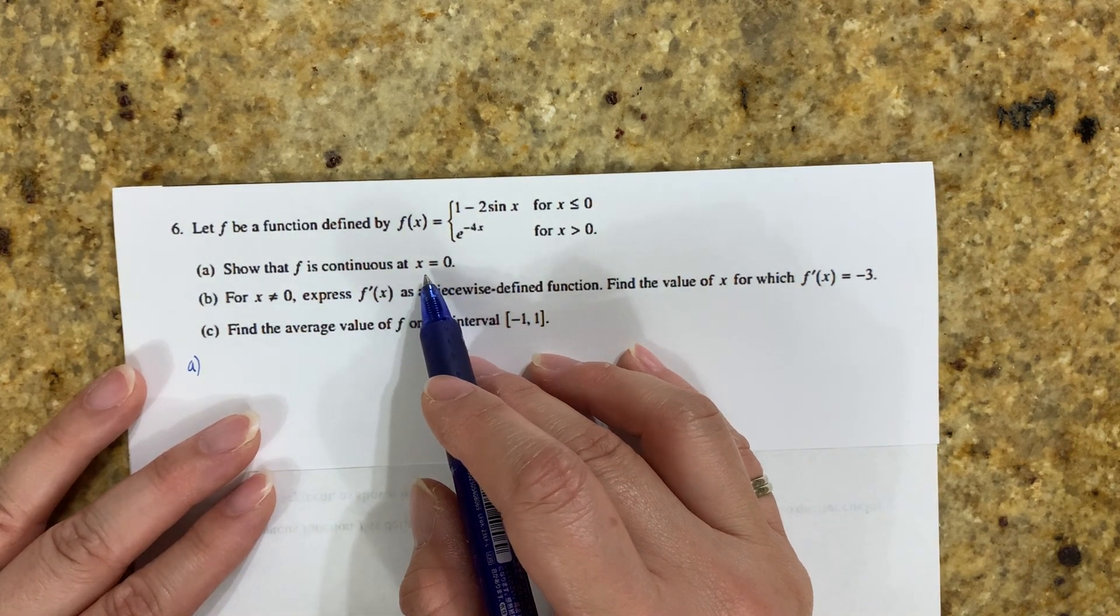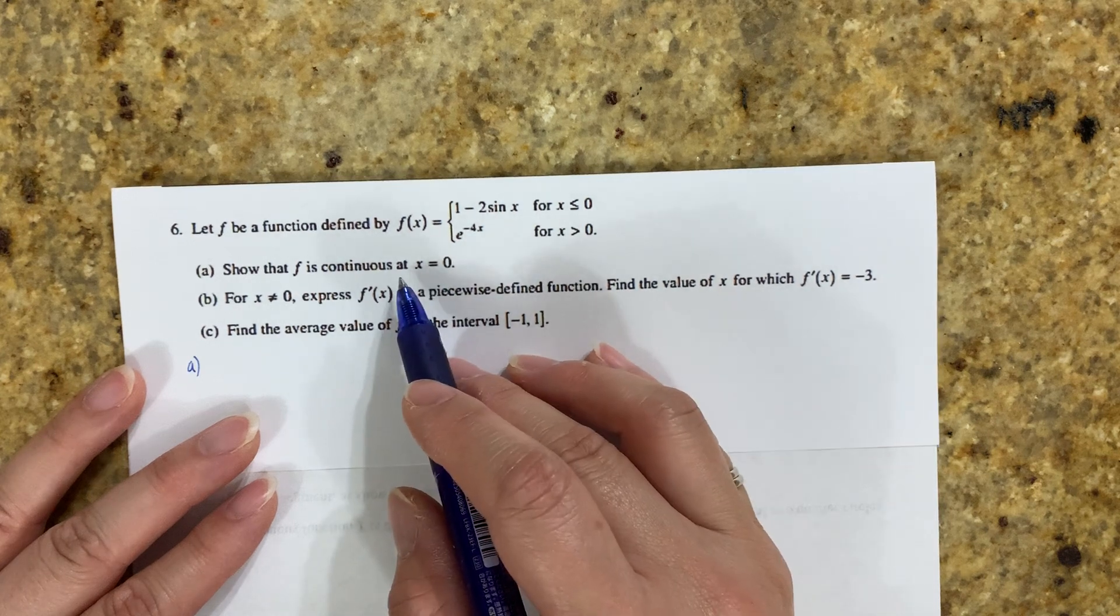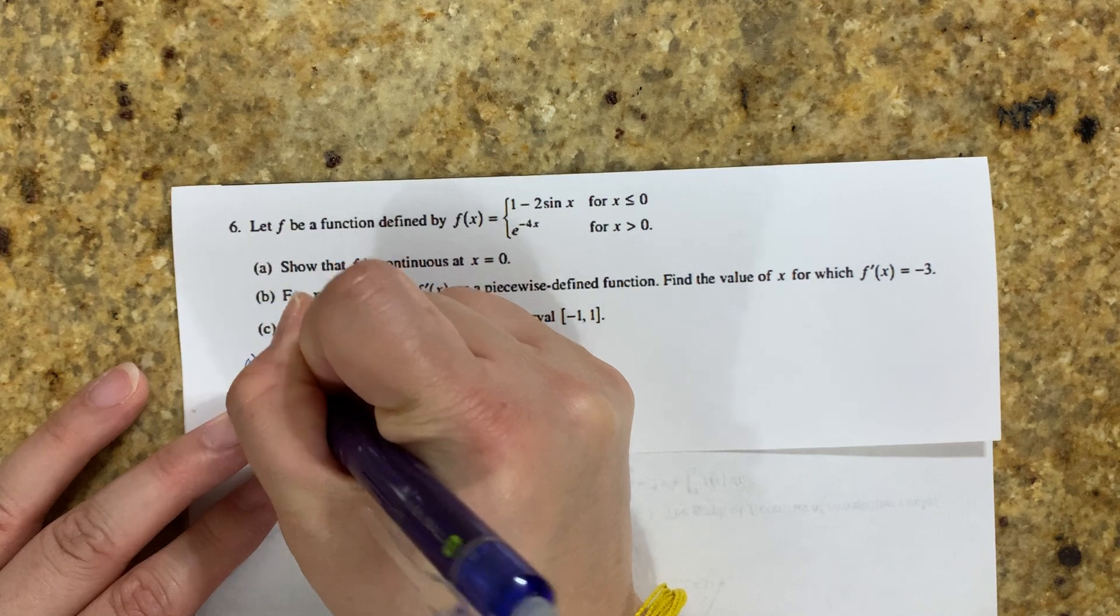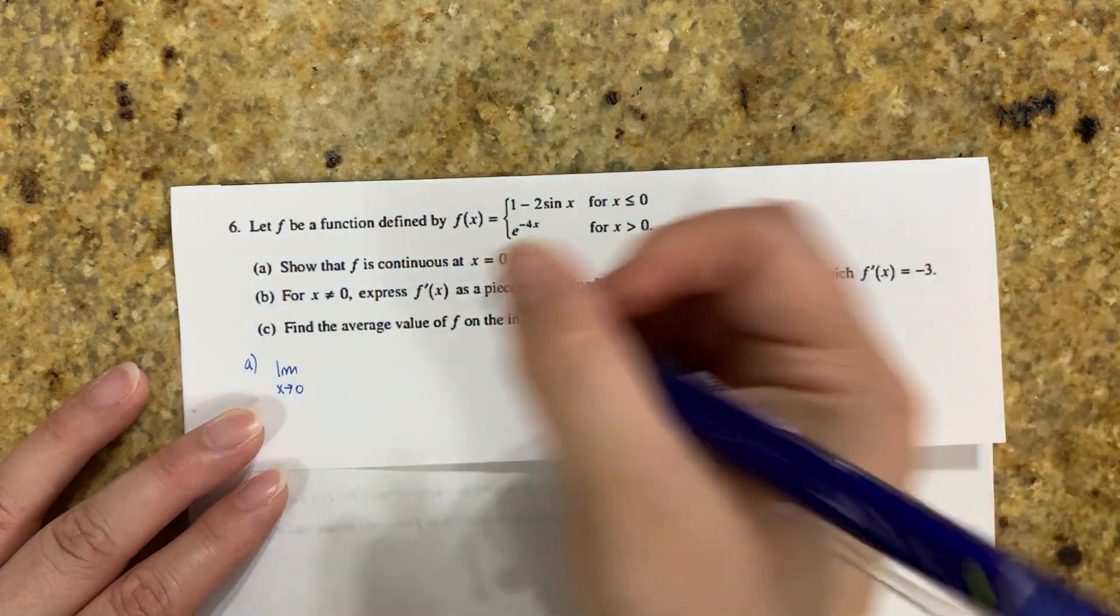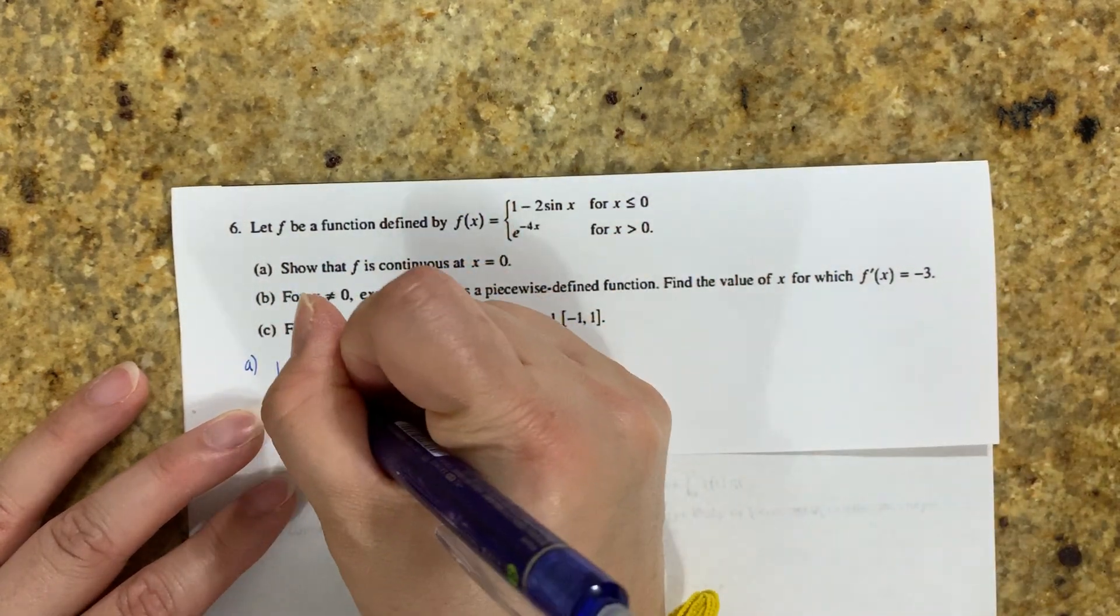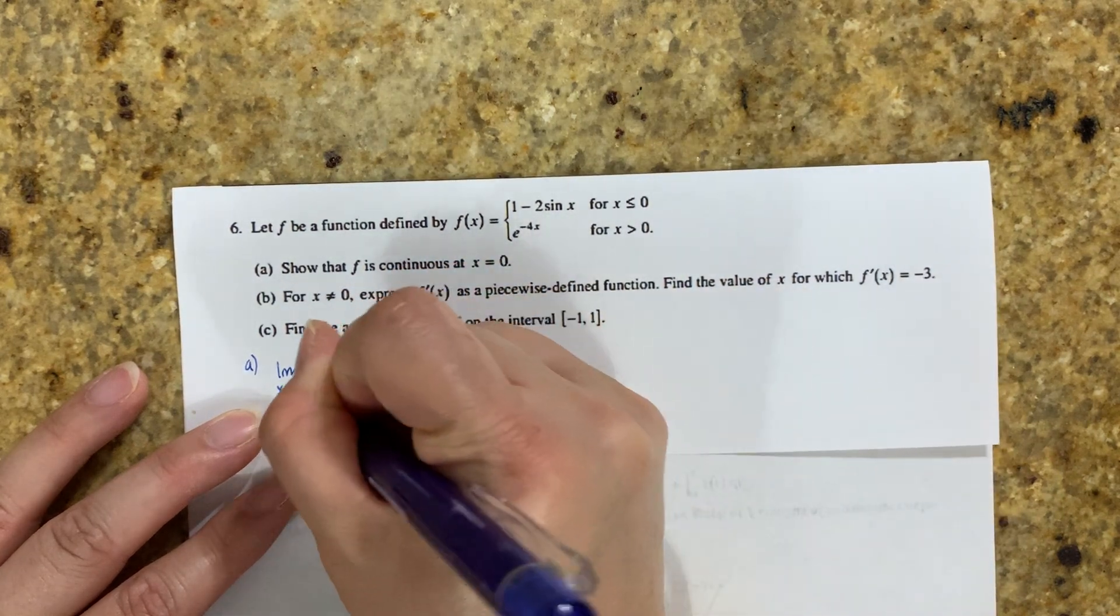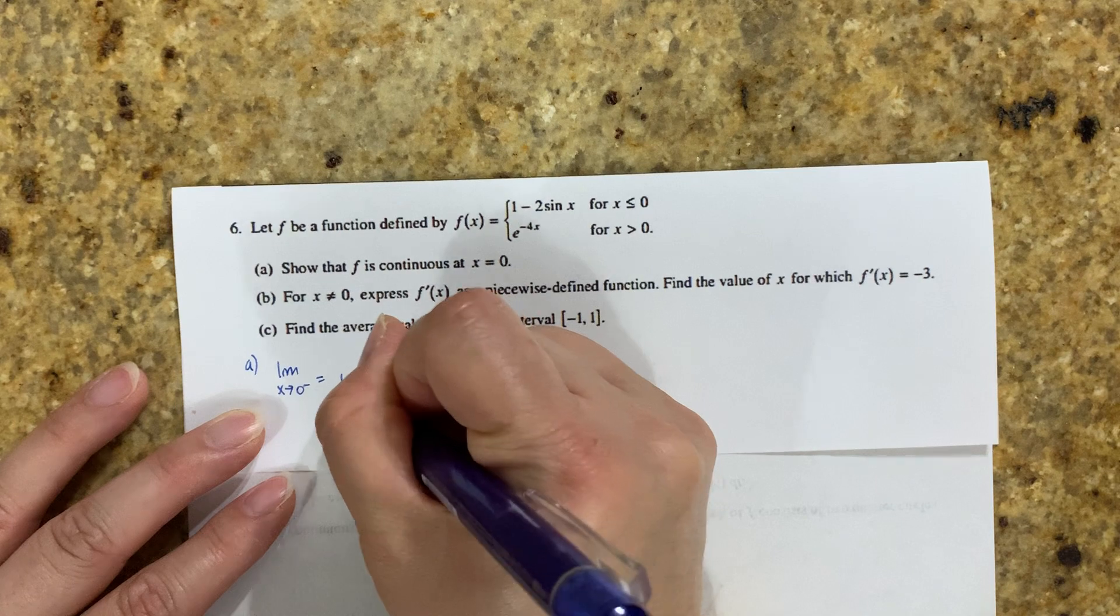Part A says show that f is continuous at x = 0. To show something is continuous, you want to show the limit exists and equals the actual value. The limit as x approaches 0 from the left side is the left equation, 1 - 2sin(x), which equals 1 - 0 = 1.